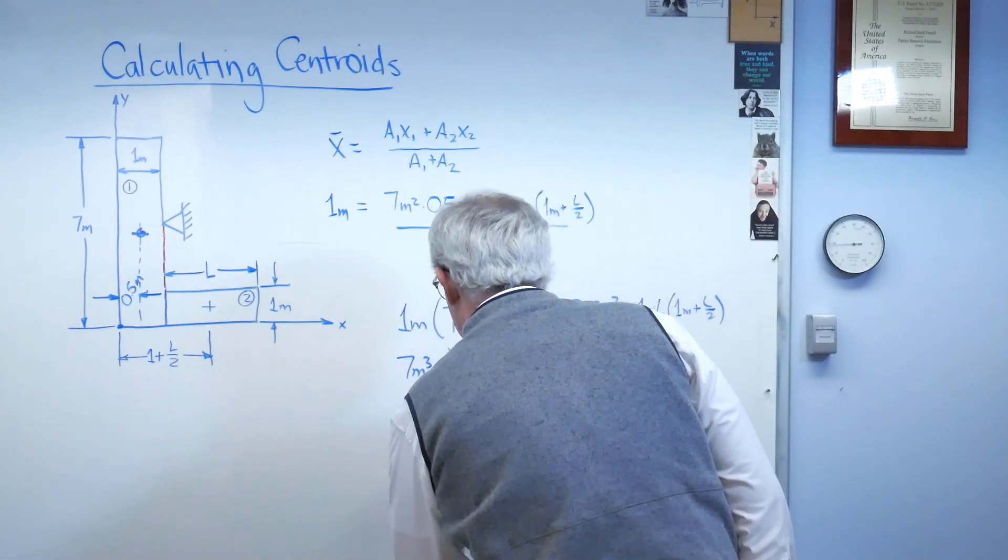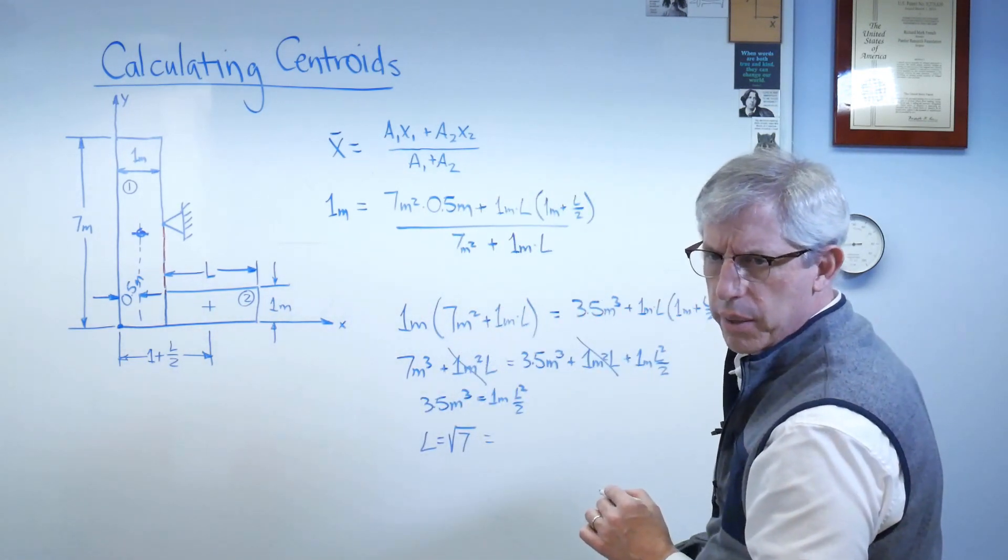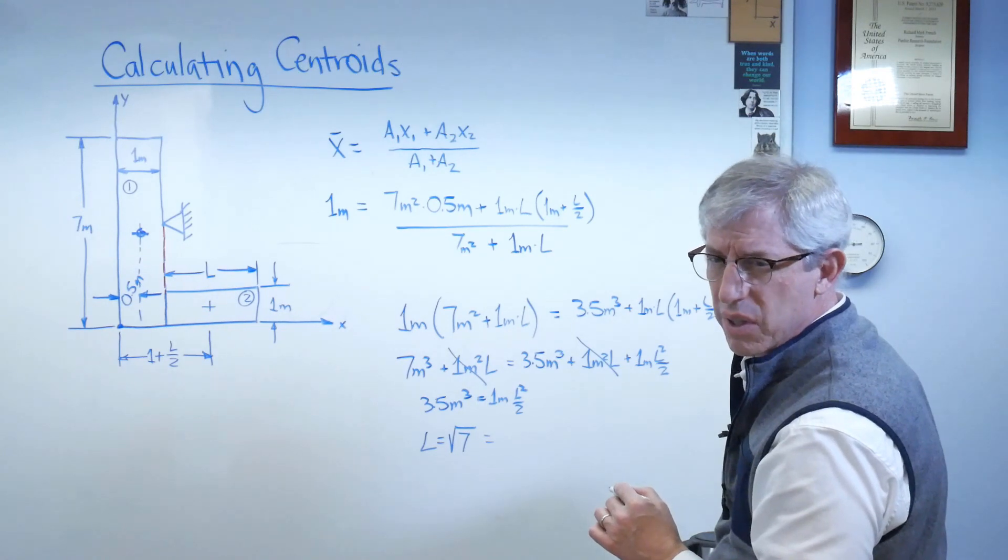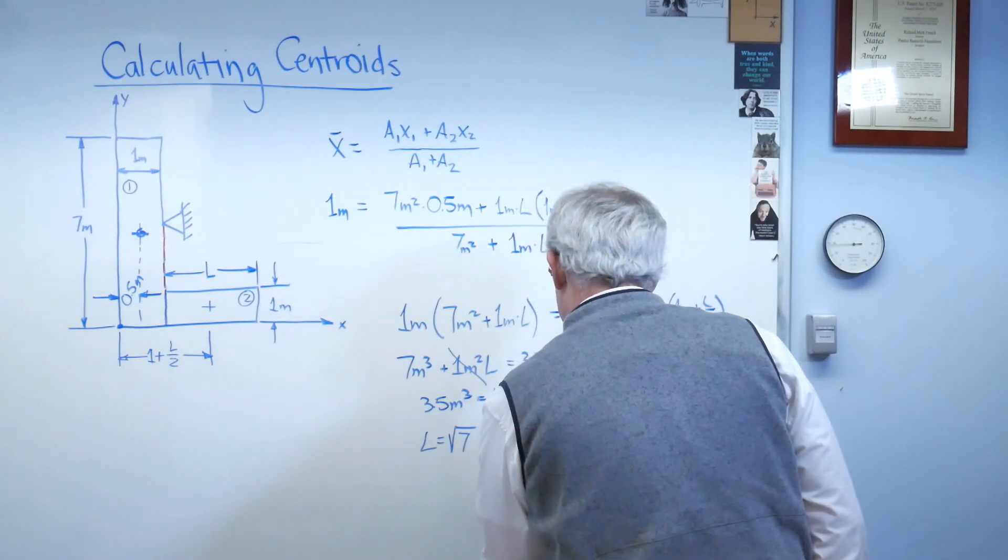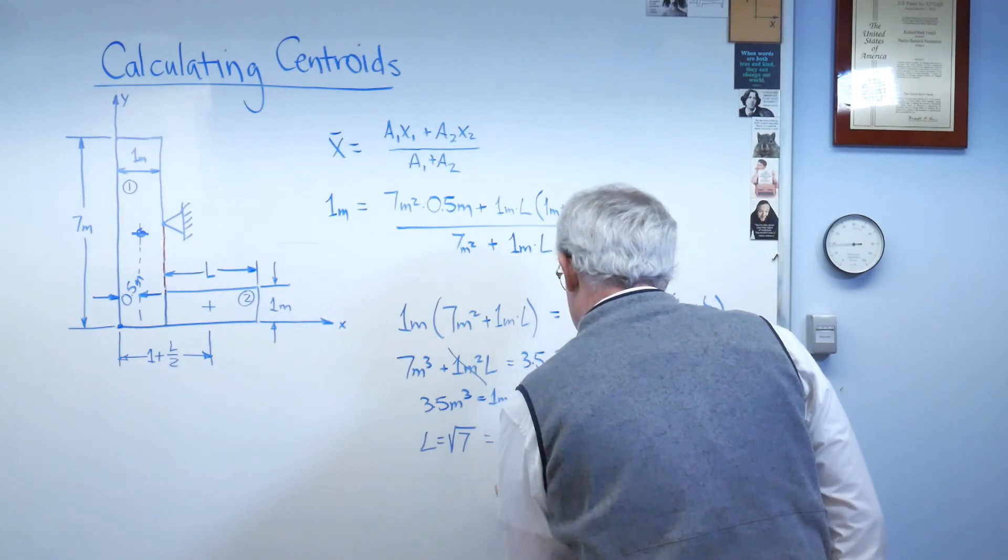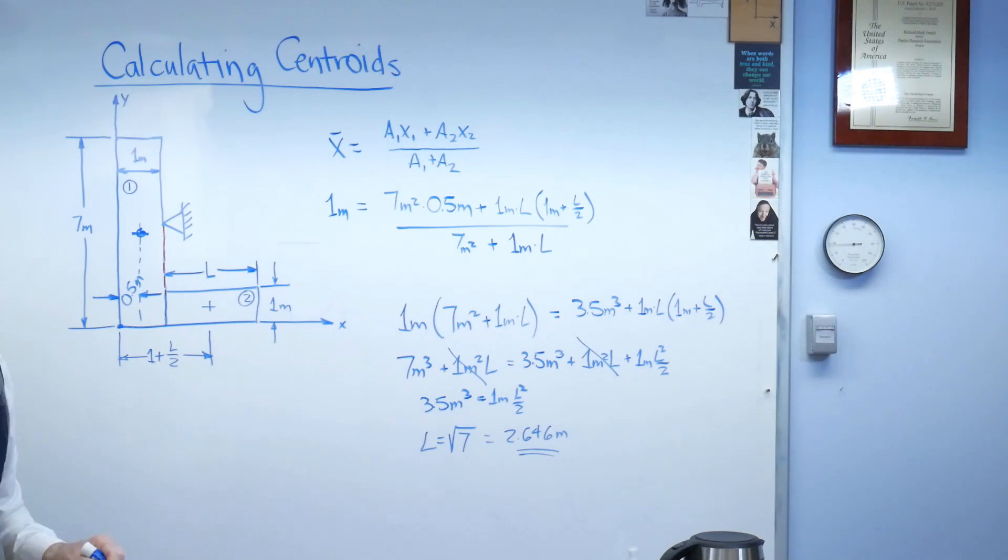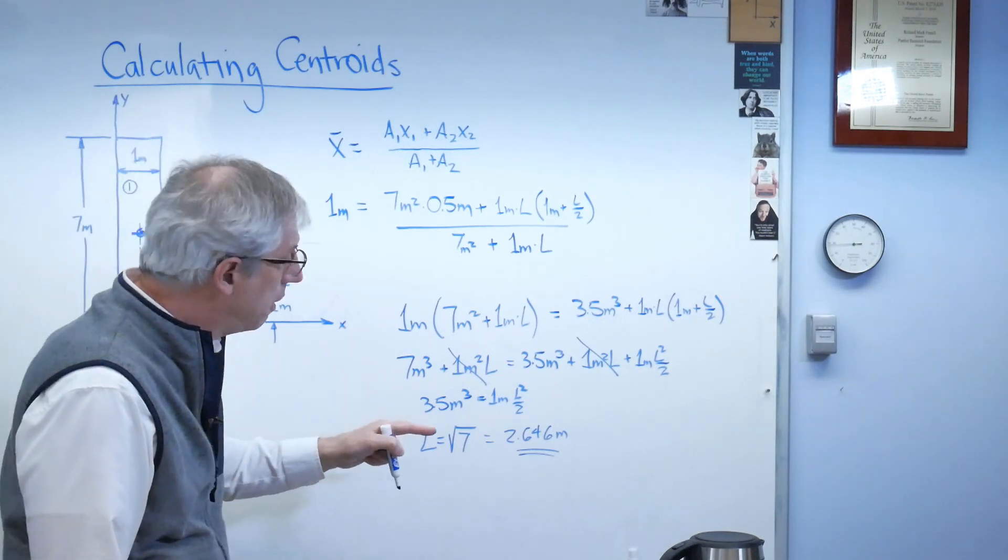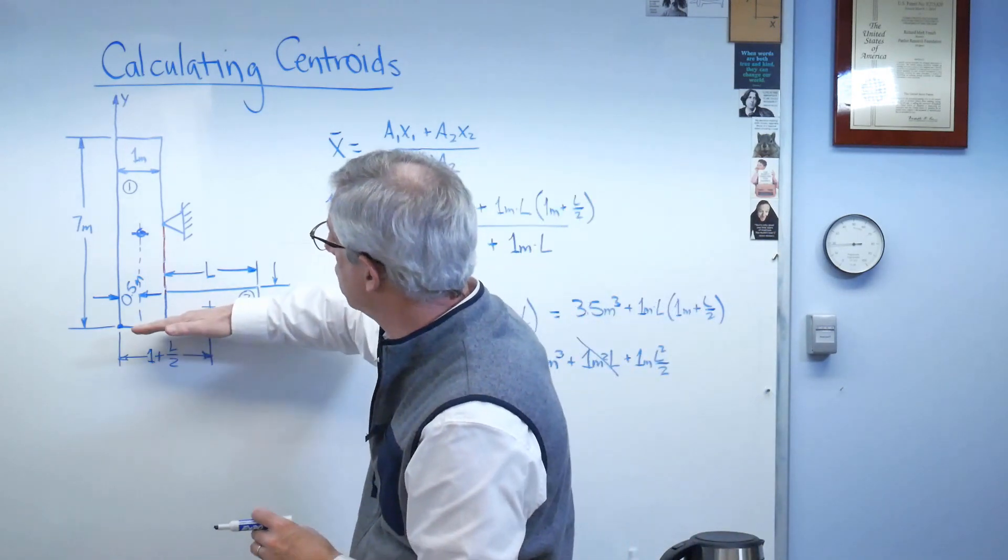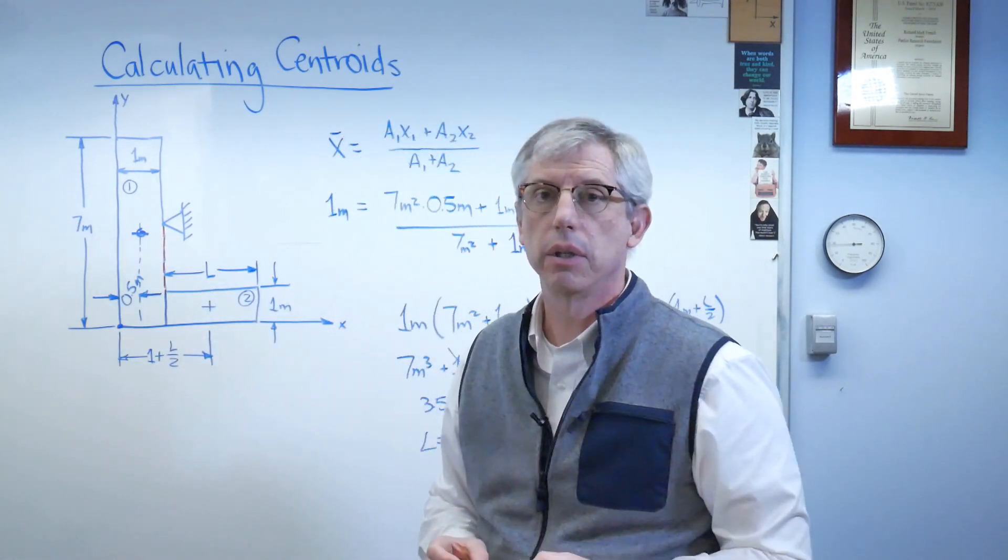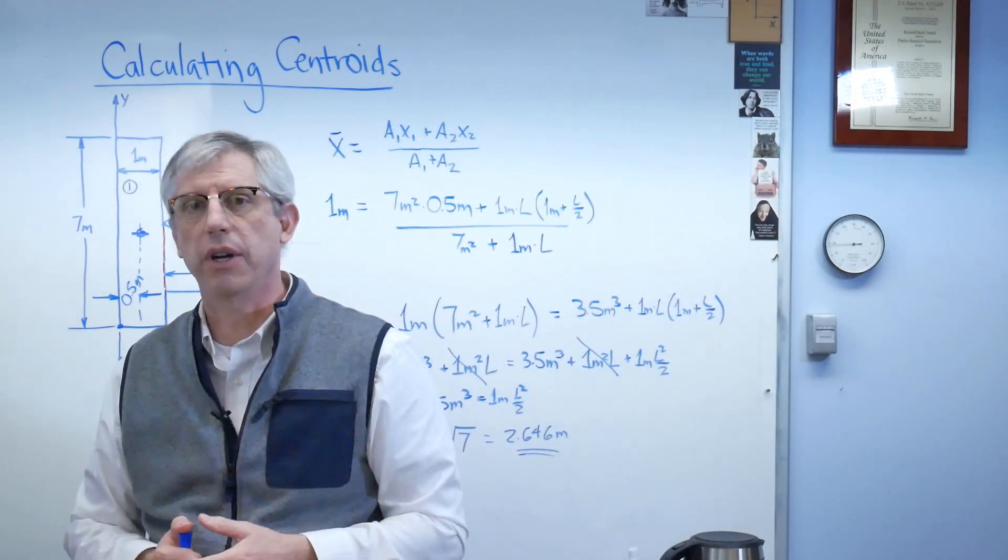When you work all that out, you get l equals the square root of 7 meters. And that turns out to be 2.646, pretty much. There. That means, if that number is 2.646 meters, then this is going to hang either, that edge is horizontal and that edge is vertical, just like the artist intended. So, I hope this helps, and we'll talk to you next time.